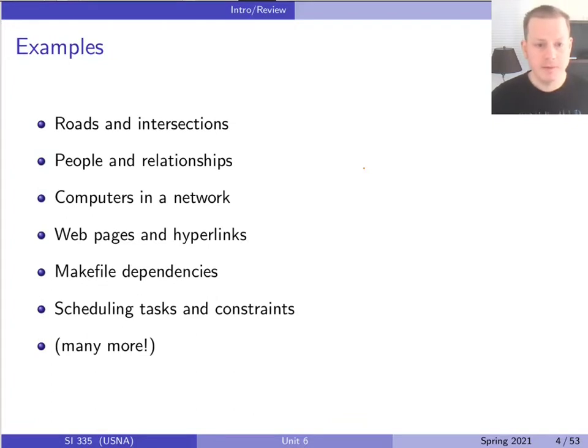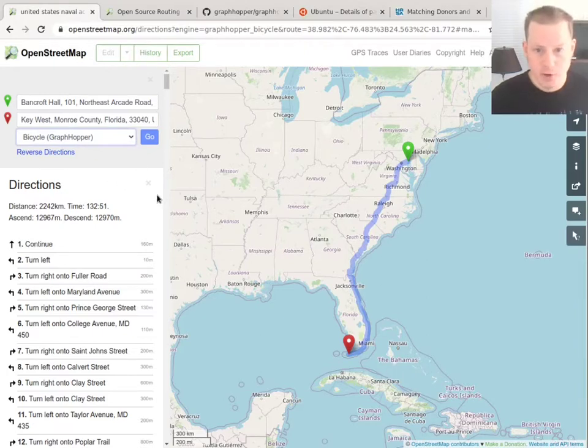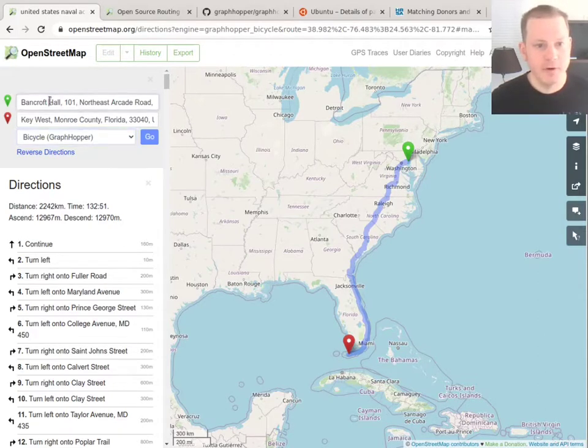So why do we care about graphs? There's a lot of different problems. I have a few examples here of different kinds of graphs that we could think about, and we can start to imagine some problems that we would do with those graphs. Let me show you some examples from the web. Here's OpenStreetMap, which is like an open source version of Google Maps. And I want to bike from Bancroft Hall at the Naval Academy to Key West, as I'm sure all of you do.